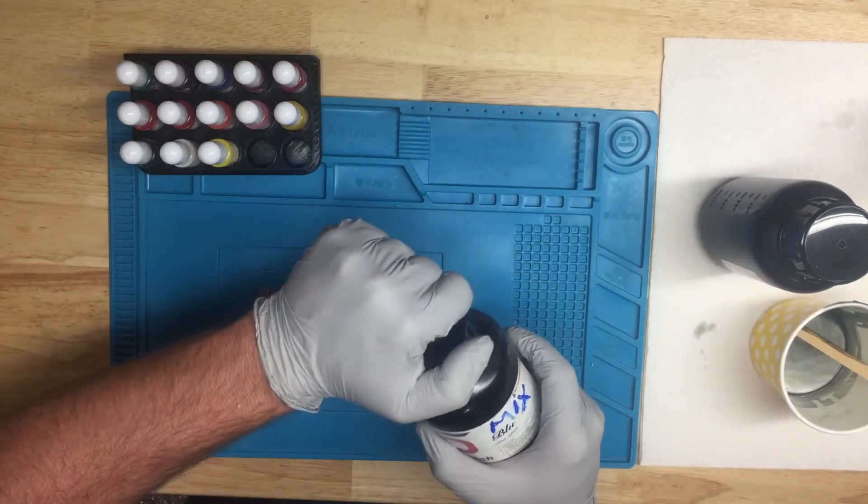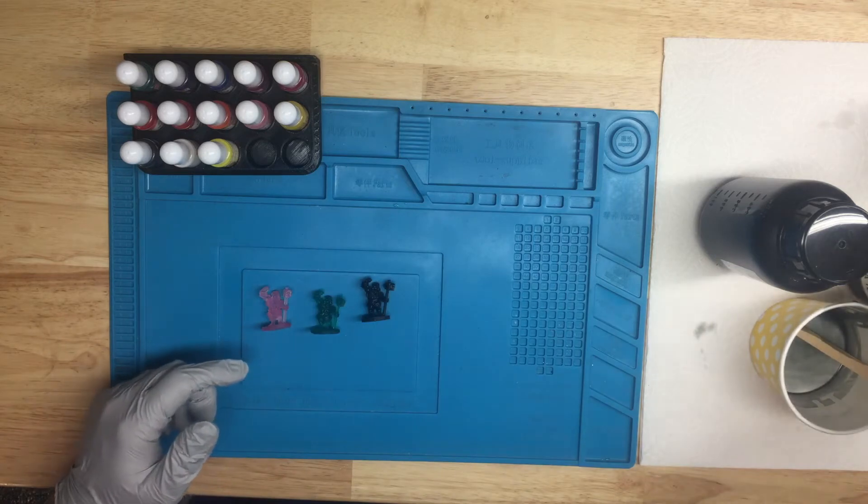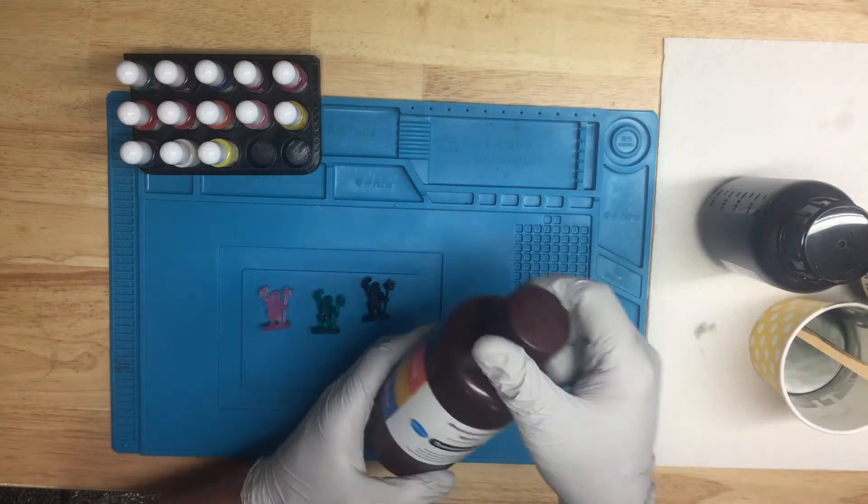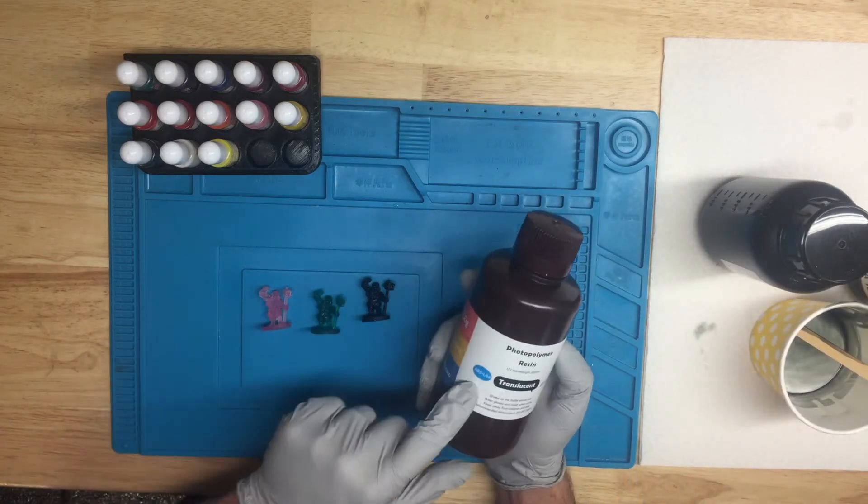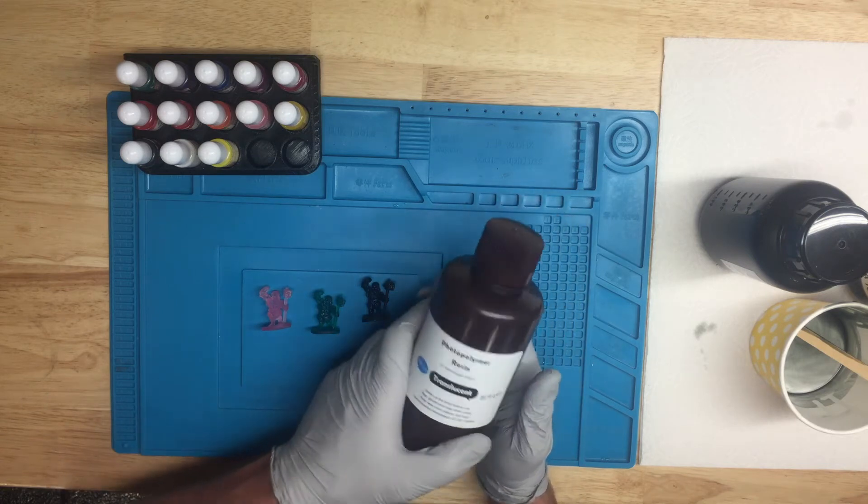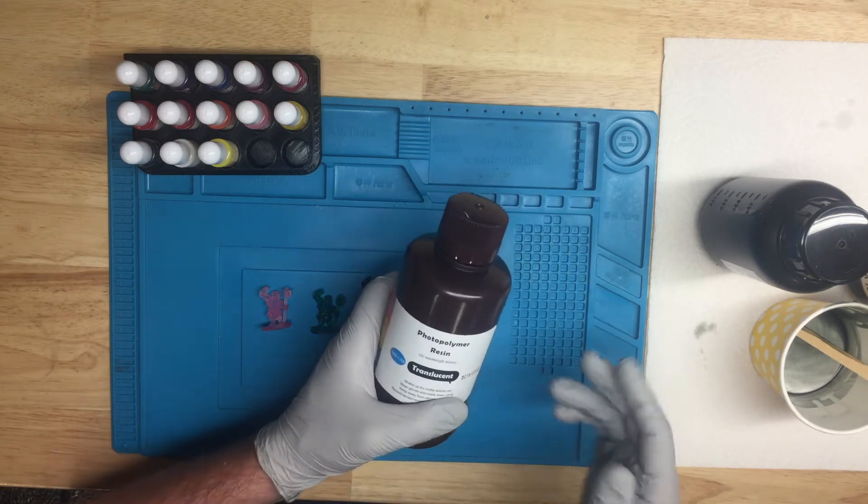Okay, so the last test I want to do is with a different type of resin. This is Elegoo ABS Like Translucent. And the reason that I ordered this is as I was making this video, this stuff is now out of stock.